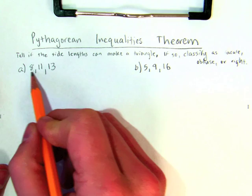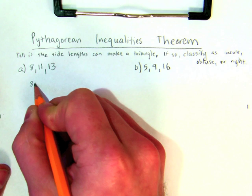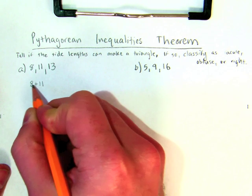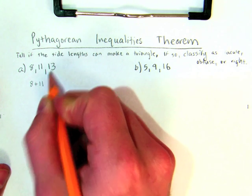So I find the two smallest sides, 8 and 11, and I add them together, and I find that 8 plus 11, I need to figure out, is it greater than or less than or equal to 13?